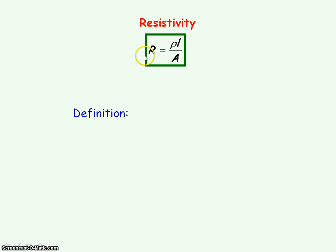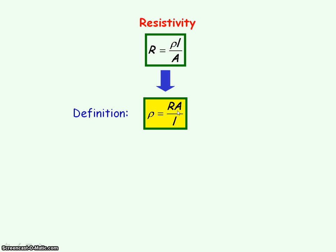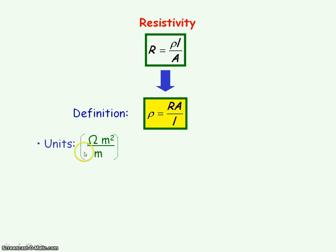If we rearrange the equation for resistance in terms of resistivity we get its definition: resistivity equals resistance times cross-sectional area divided by length, ρ = RA/L. The units of resistivity are therefore ohms times meters squared divided by meters — one of the meters cancels — giving units of ohm metres (Ω·m).